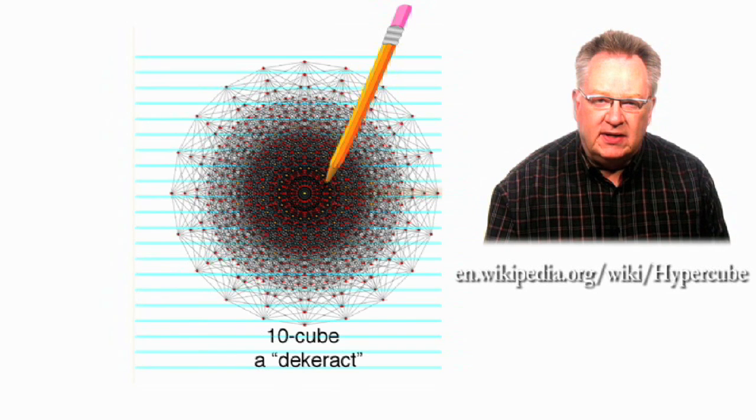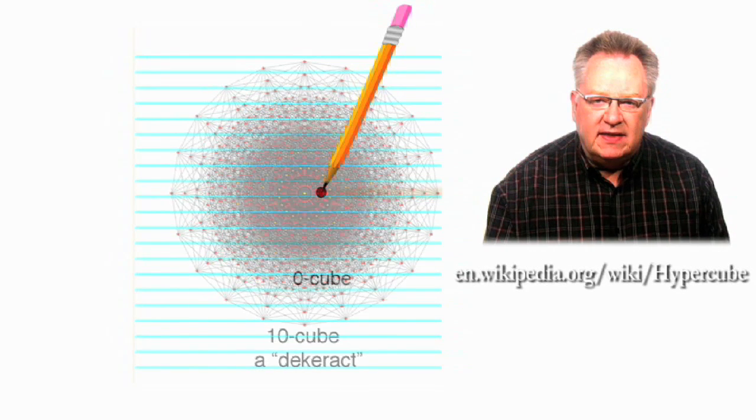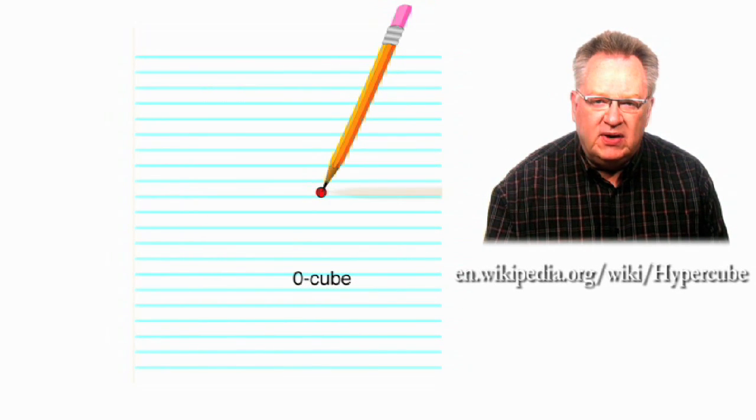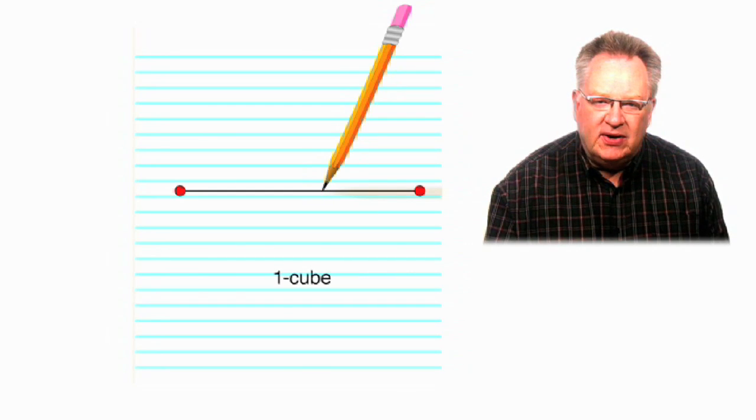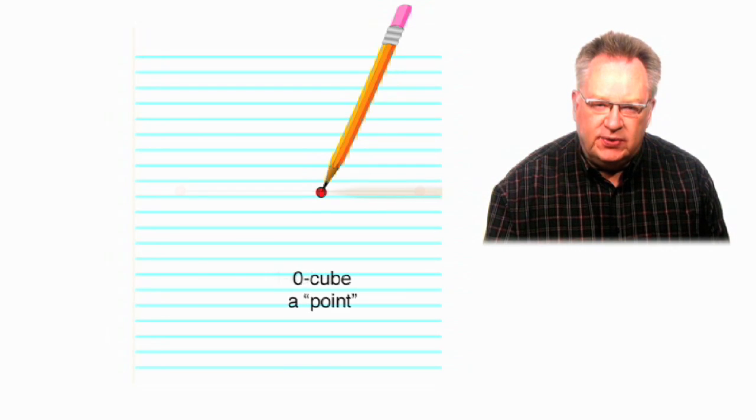If you go to the Wikipedia article on hypercubes, you'll see that the point we started from can be called a zero cube. And the 1D line can be called a one cube, and so on. Here's the whole list.